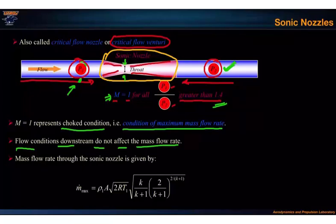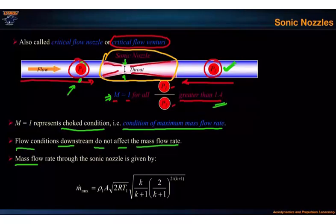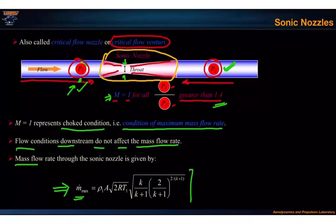The mass flow rate through such a device can be measured based on the principles of continuity and momentum combined with the Euler equation. Combining these, we can derive the maximum mass flow rate — the mass flow rate at the choked condition — for a given p1.